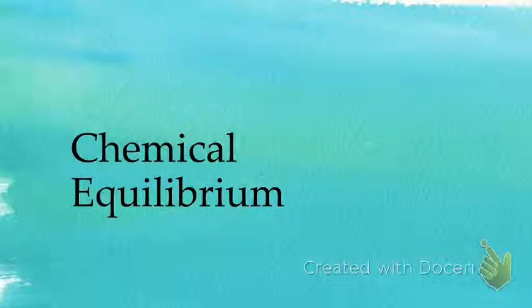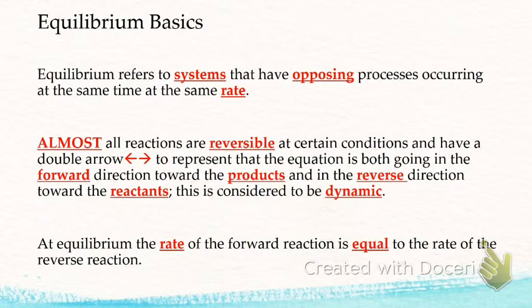Okay, chemical equilibrium. Here we have the definition of equilibrium. It's when you have systems that have opposing processes occurring at the same rate. So an example of that would be the forward and the reverse reaction are happening at the same time and at the same rate.